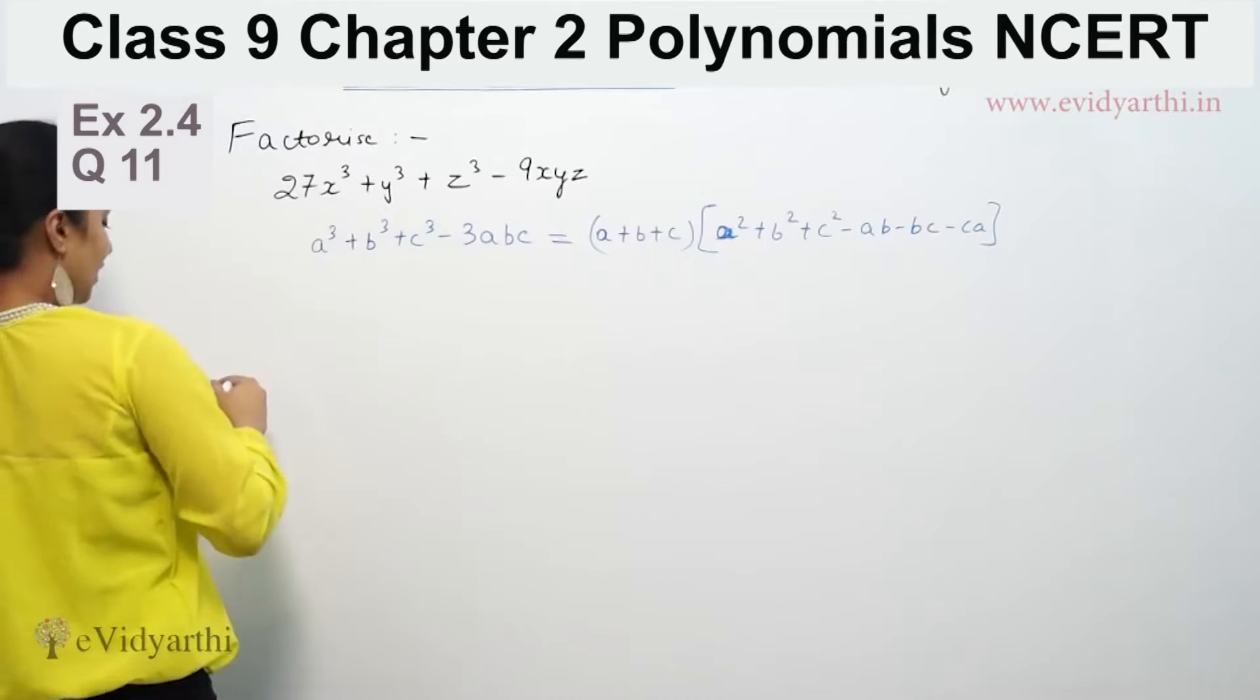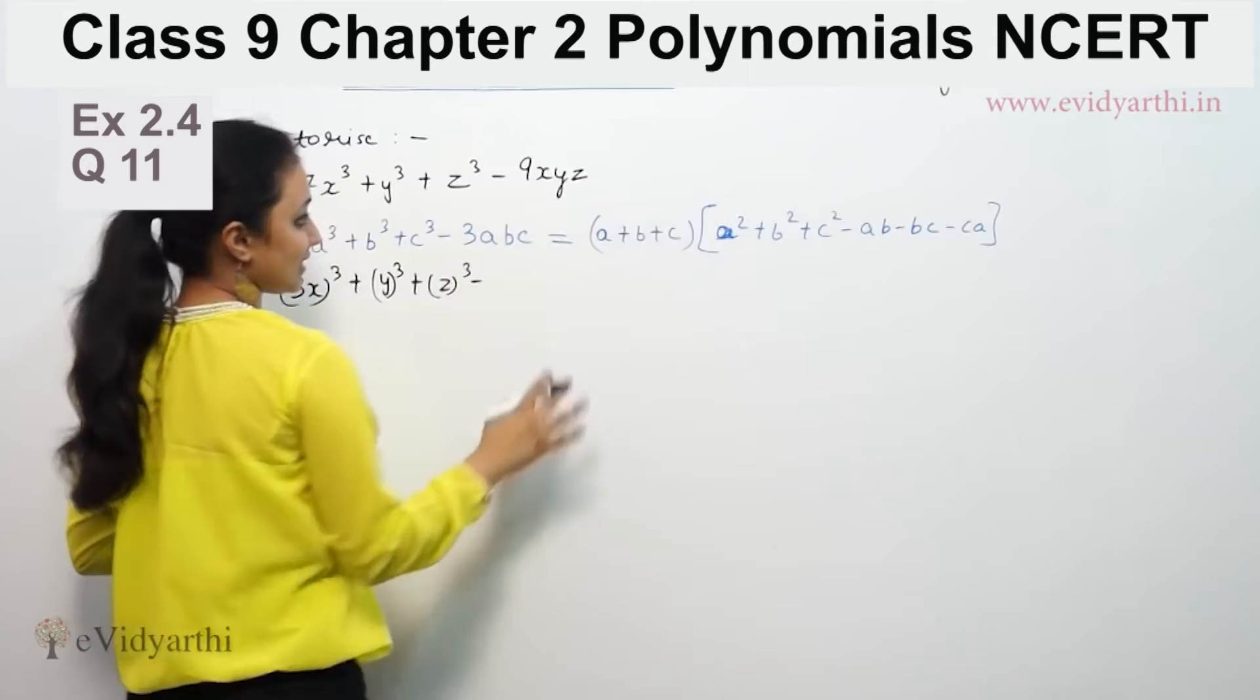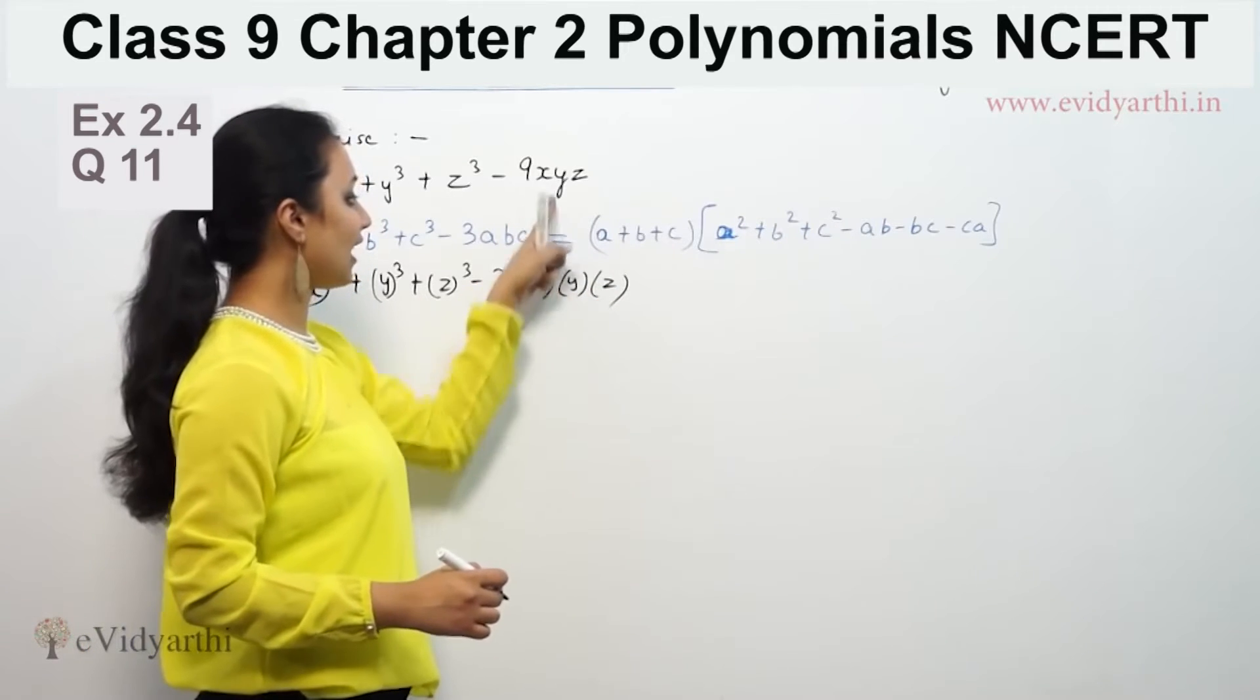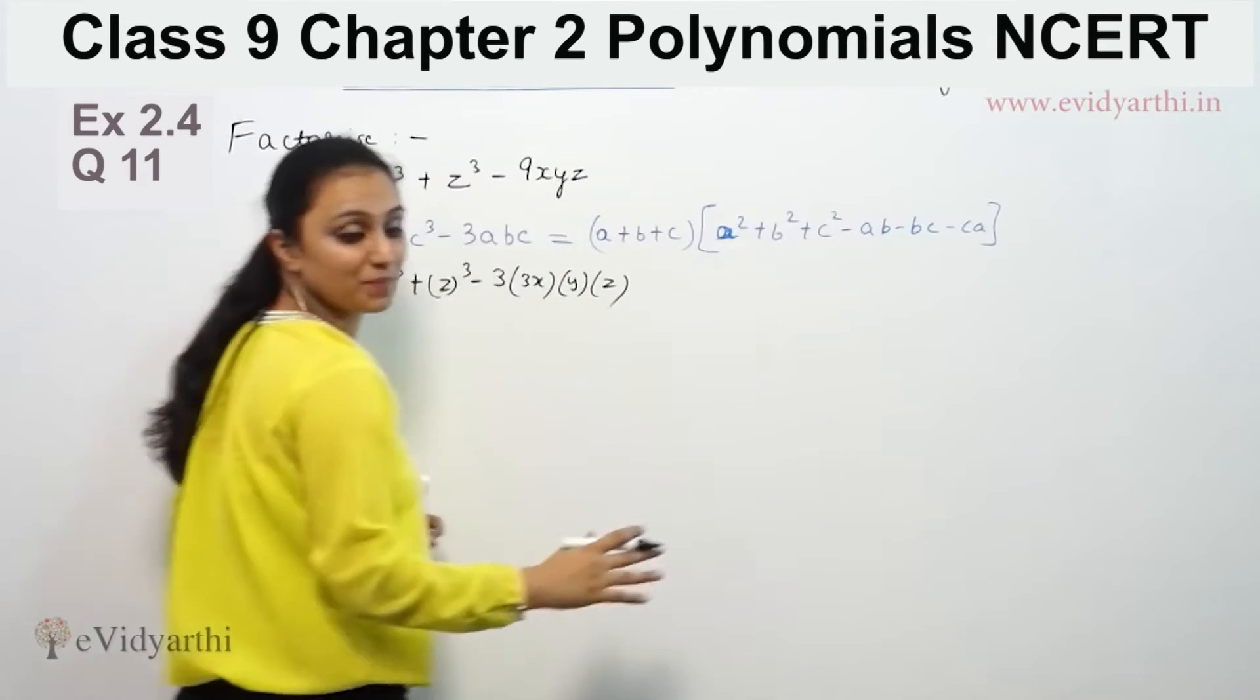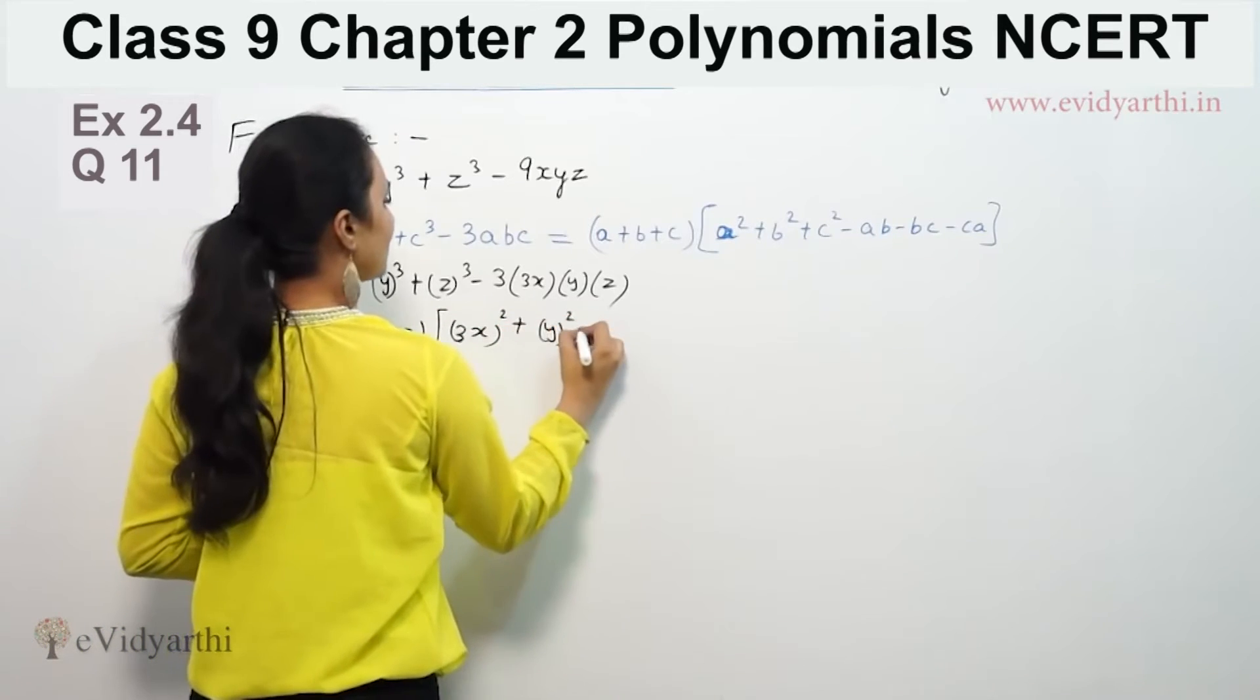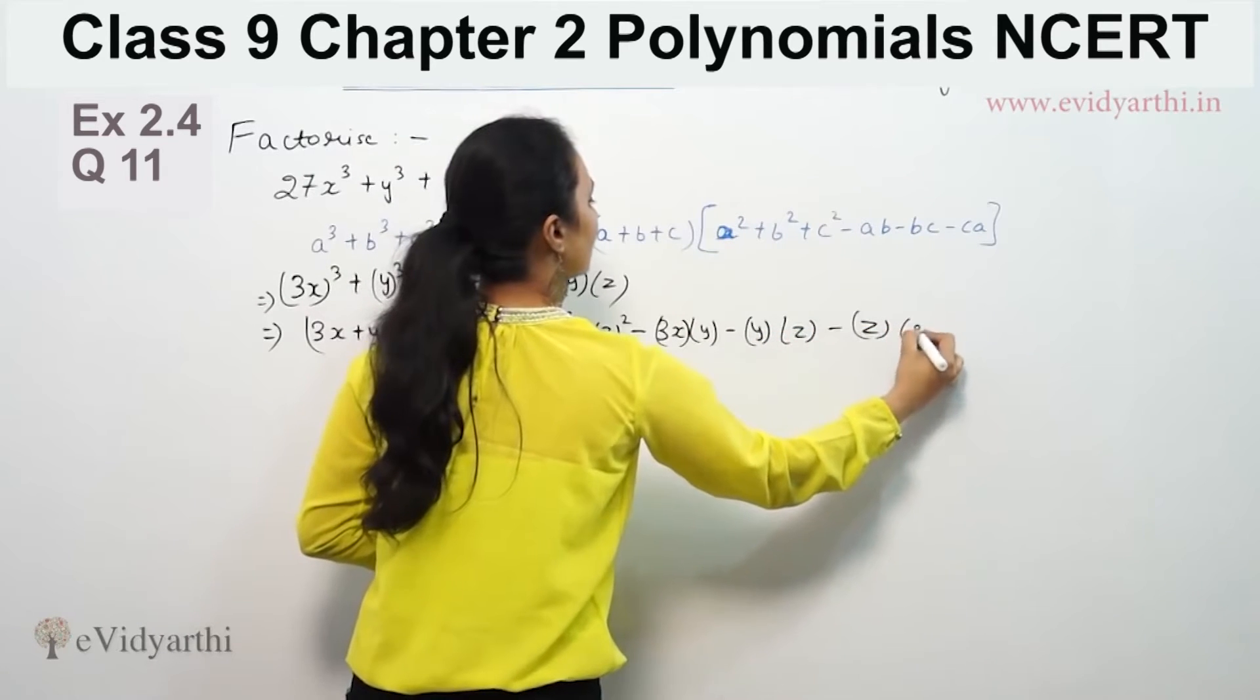So let's factorize 27x³ + y³ + z³. We have to use the identity where 3abc equals 3 times 3x times y times z, which is 9xyz. So a is 3x, b is y, c is z. So we have (a + b + c) which gives us (3x + y + z) times (a² + b² + c² - ab - bc - ca).